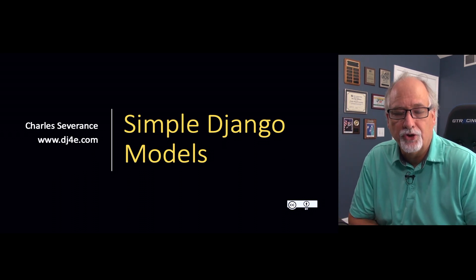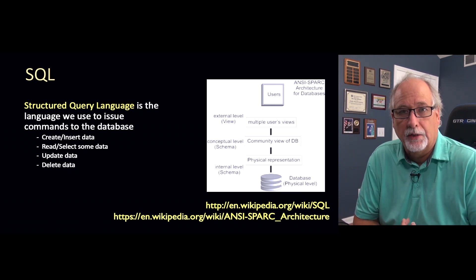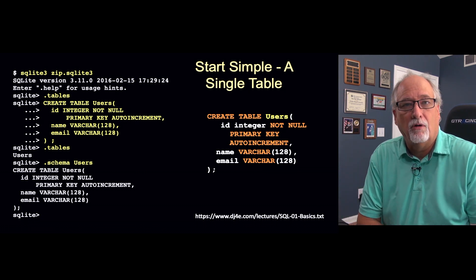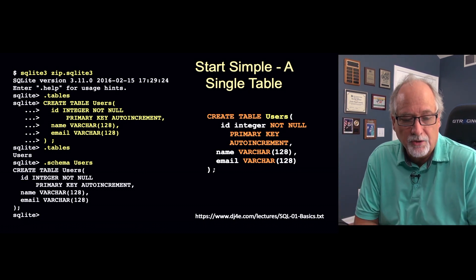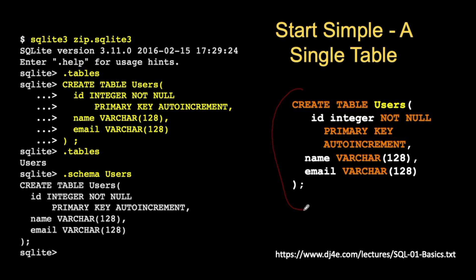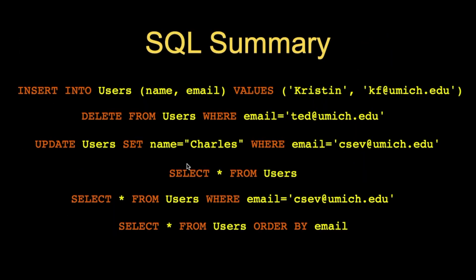Hello and welcome to our lecture on simple Django models. As you've seen in previous lectures, we talked about SQL, Structured Query Language, and that's how we talk to databases. It allows portability up to a point across databases. We talked about all the create table stuff, and this is just a bit of review where we can type these commands to SQLite. We can run a create table statement and see a schema of users. That's basically how SQL works — it's pretty simple CRUD.